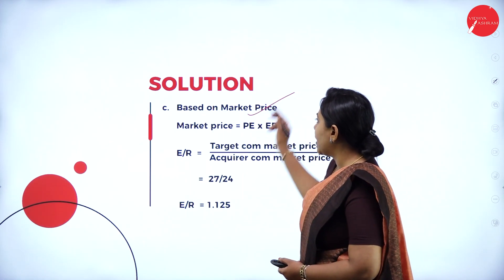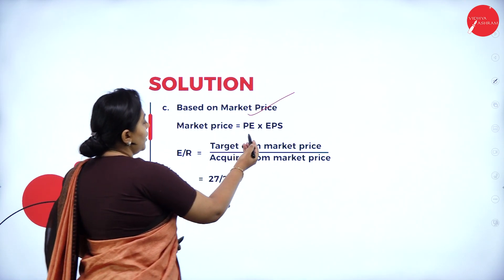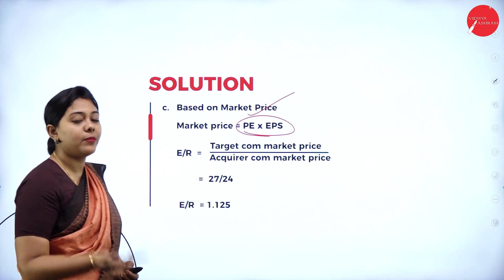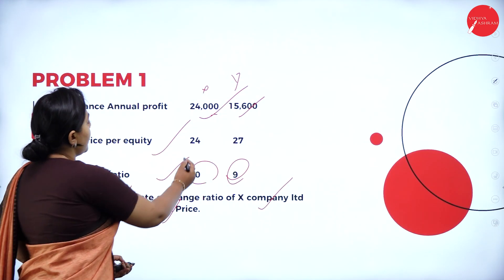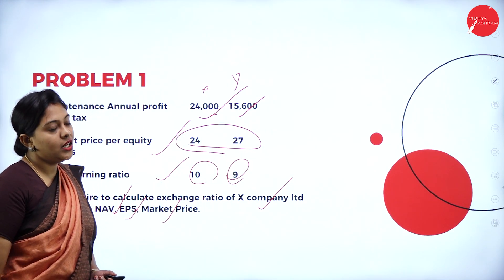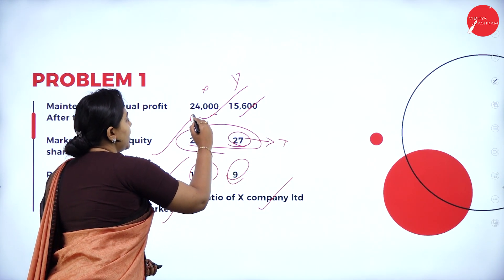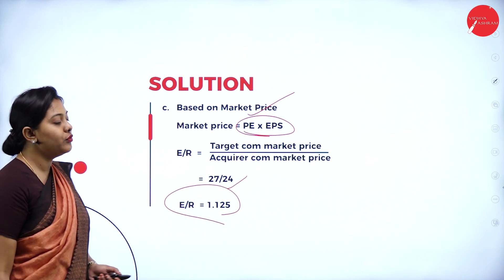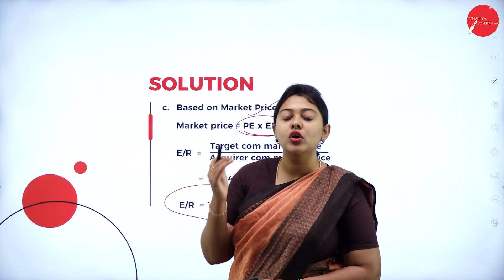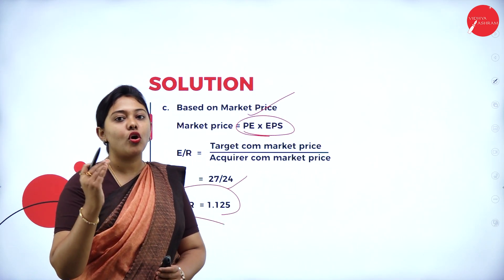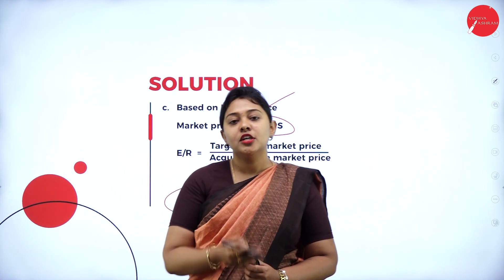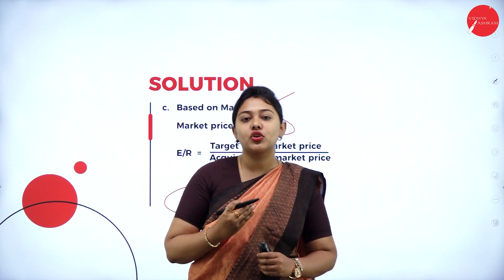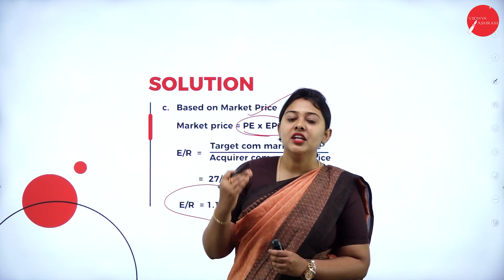Next, we calculate market price. Market price equals price-to-earnings ratio multiplied by EPS. In this question, the target company and acquirer company market prices are directly given: target company 27, acquirer company 24. So 27 divided by 24 gives an exchange ratio of 1.125. This is how you calculate exchange ratio based on net assets method, EPS method, and market price.